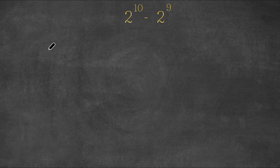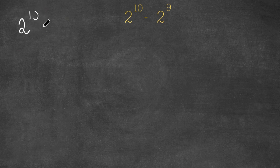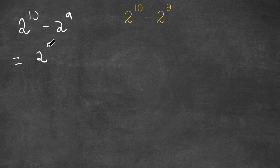What I'm first going to do is rewrite this 10 as 9 plus 1. So we have 2 to the power of 10 minus 2 to the power of 9, and this is equal to 2 to the power of 9 plus 1 minus 2 to the power of 9.